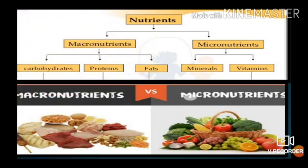Nutrients can be classified into two types: macronutrients and micronutrients. Nutrients like carbohydrates, proteins, and fats are required in large quantity — these are macronutrients. Minerals and vitamins are required in very small quantity — they are called micronutrients.